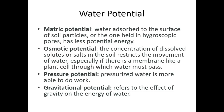Then we have the osmotic potential. That one is stated as the concentration of dissolved solutes and salts in the soil. Soil restricts the movement of water, especially if there is a membrane — like a plant cell — through which water must pass. If there's some kind of membrane there, like in plants, it is going to have some kind of pull on the water. Pressure potential is next — pressurized water is more able to do work. The last one is gravitational potential, which has to do with the effect of gravity on the energy of water.